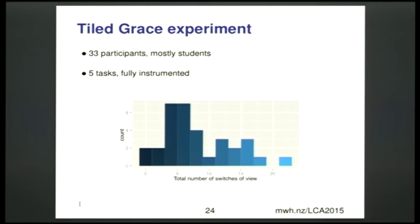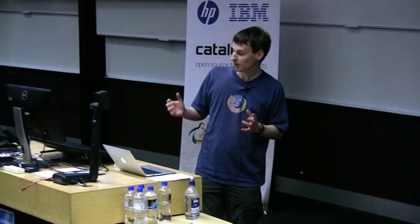We ran a user experiment to see if people would actually use that ability to switch. We had 33 participants, primarily students with a modal age of 18 and median age of 20; 30% identified as female, 70% as male. We have a histogram of how many times each participant switched view across five tasks. Two people never switched at all, two more switched once, and a large hump of people switched multiple times. It appears people will actually use this feature. Feedback suggested that just the ability to see the same code in two different ways was found to be useful.